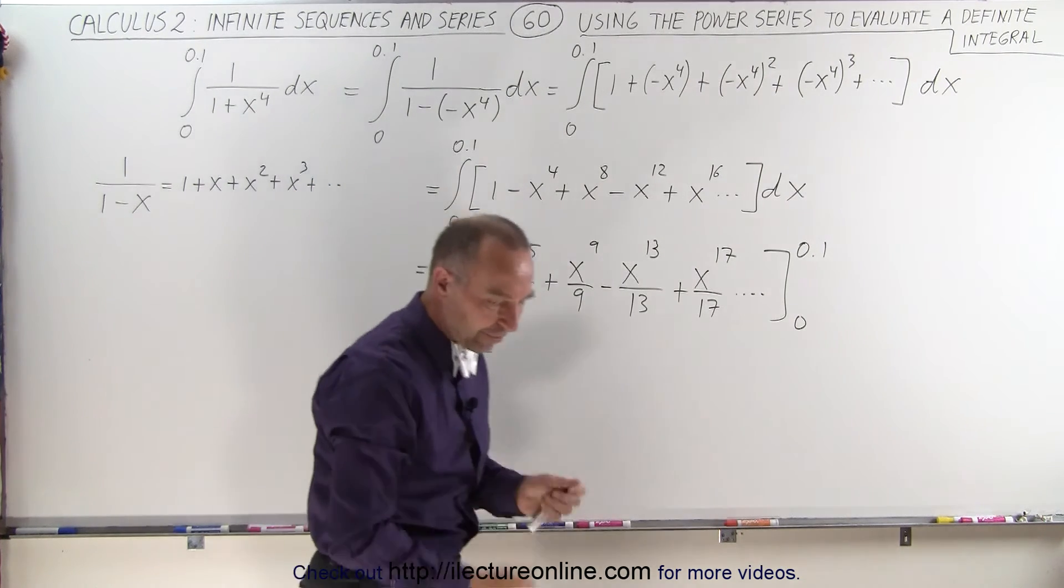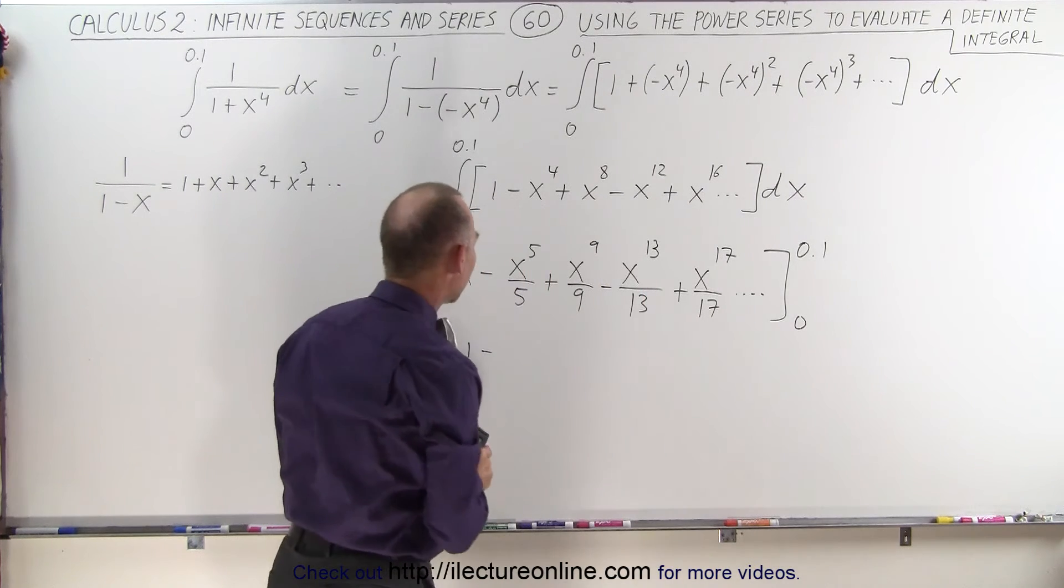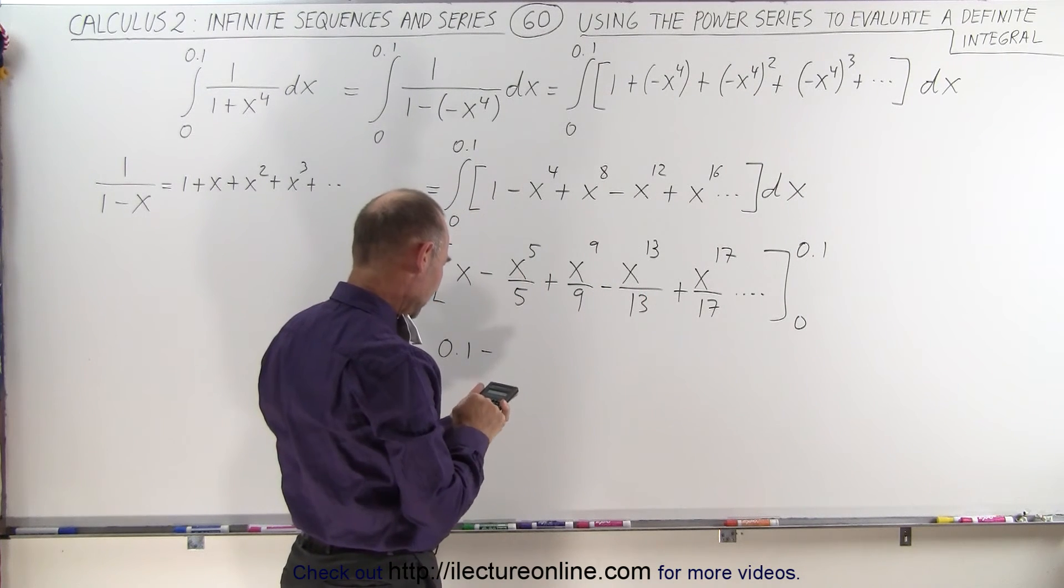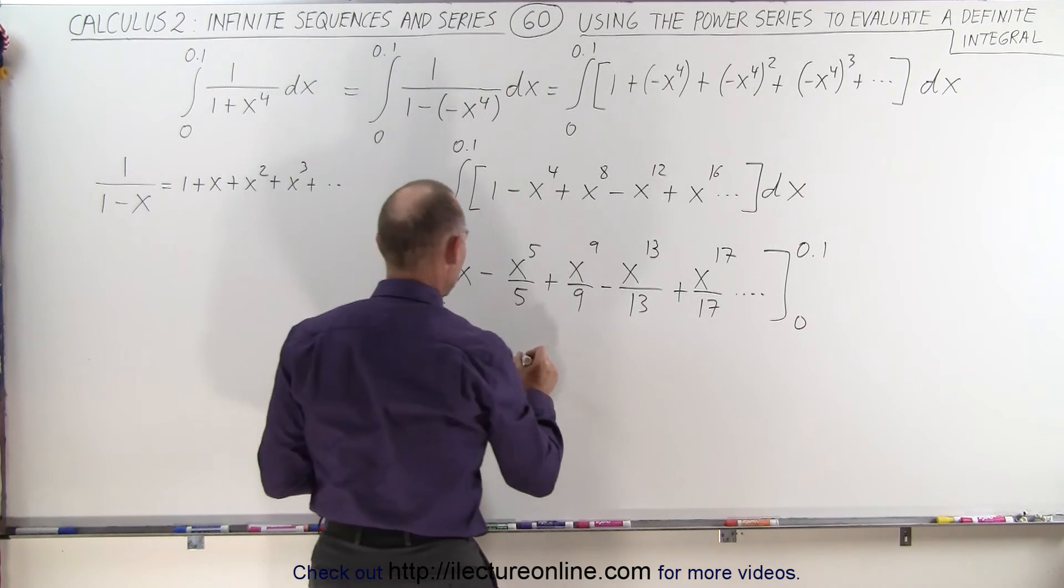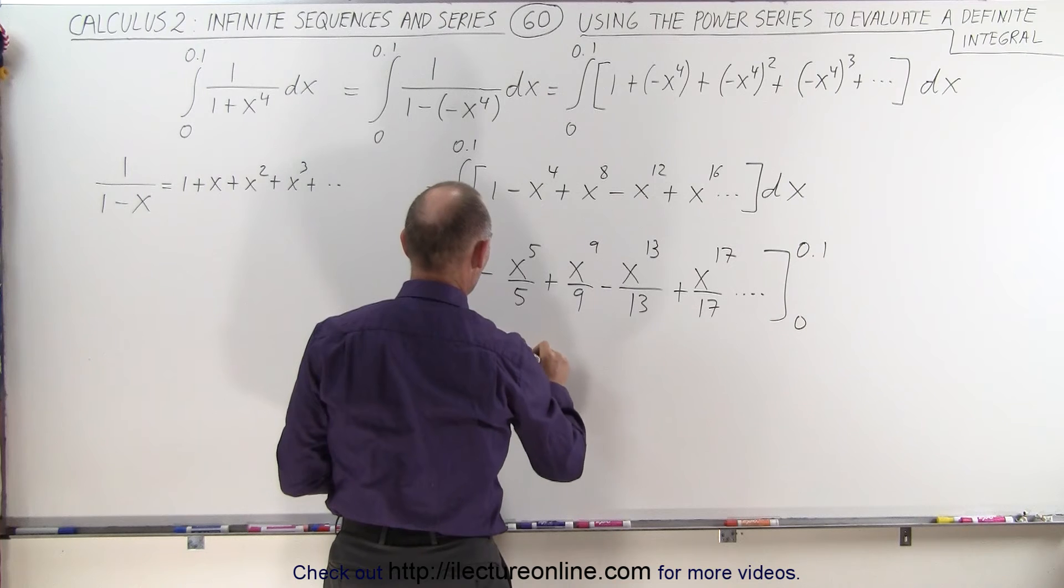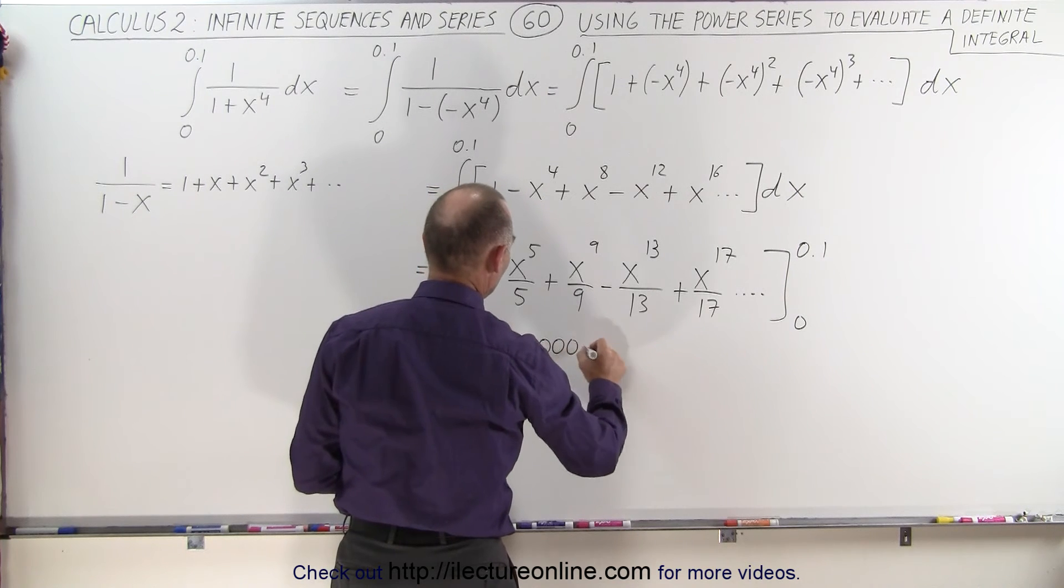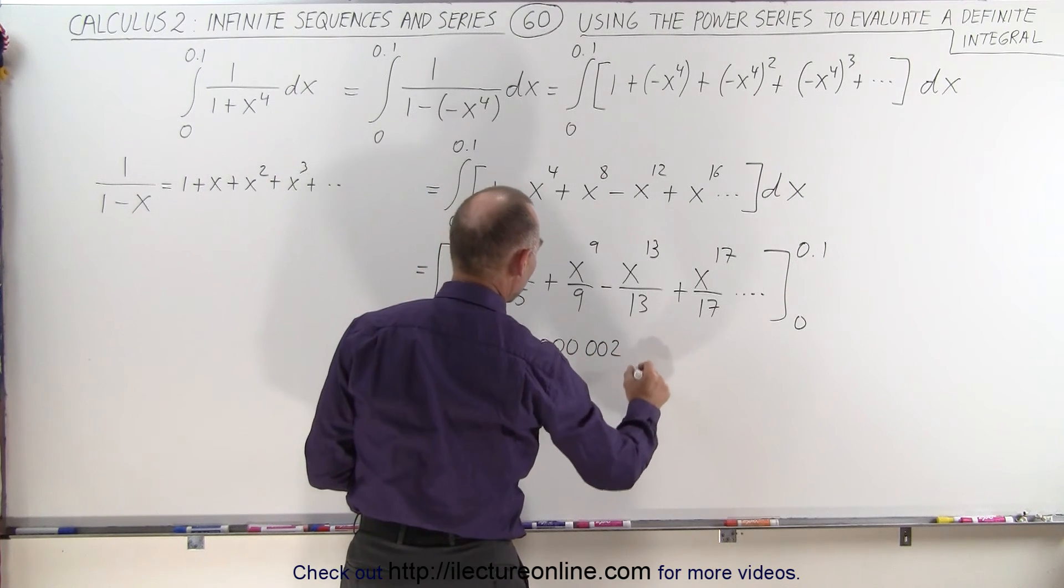And so this becomes equal to 0.1 minus. Now x to the fifth divided by 5, that's 0.1 raised to the fifth power, divided by 5. So that would be minus 0.00002 plus.